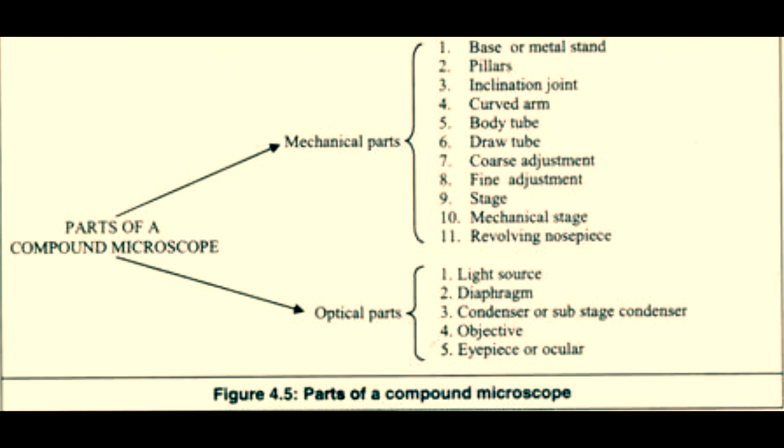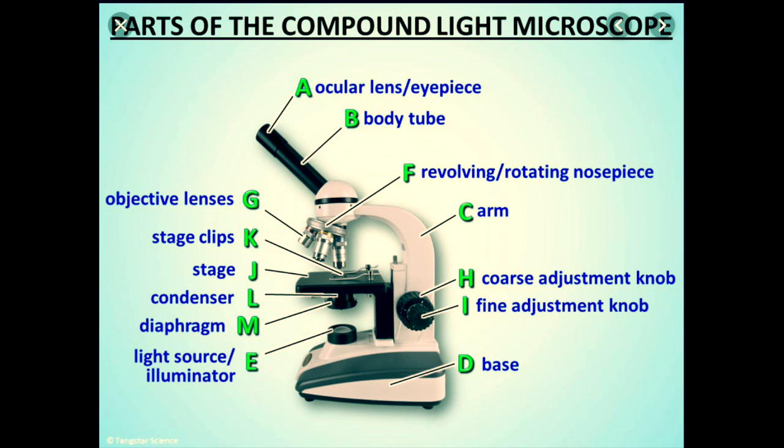And the optical parts consisting of light source, diaphragm, condenser, objective lens and eyepiece lens. Let us now have a closer look at a labeled diagram of the compound microscope.